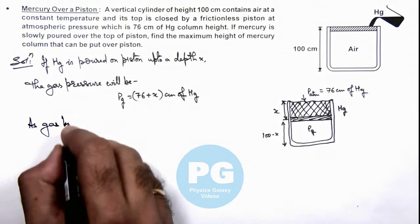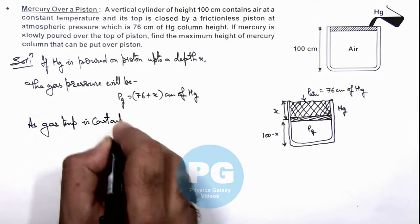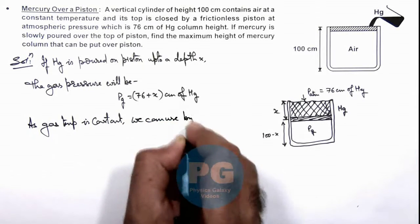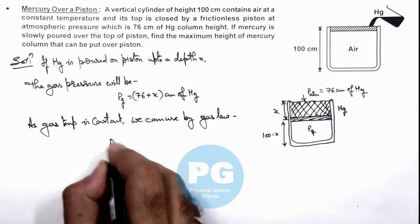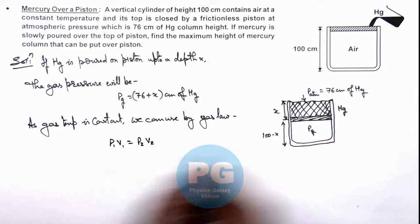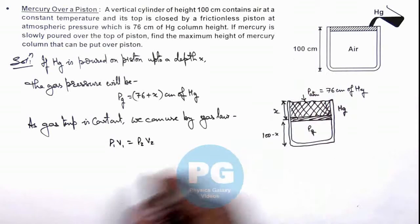Now we can write that gas temperature is constant, so we can use the gas law P1V1 equals P2V2. Initial pressure in the state when the volume of air was 100 centimeters was 76 multiplied by the volume we can take as 100 centimeters.